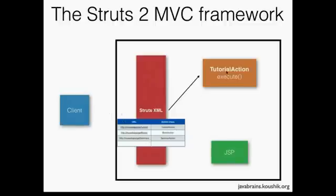Now the client has made a request and right now we are printing to the logs. The client is wondering what's going on. So we have to send a rendered JSP back to the client. That's going to be the next step. Now how does an execute method transfer the flow of execution to the JSP? An execute method could do a lot of things.